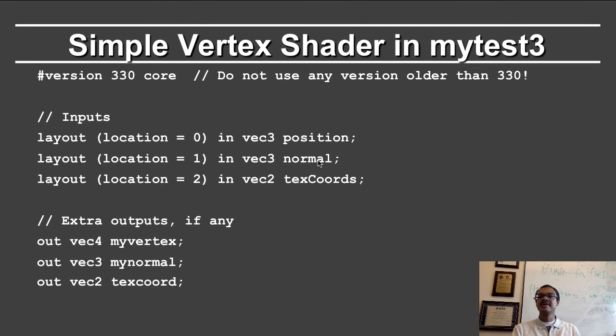The texture coordinates input are just two variables, which are typically denoted as s and t. The outputs are the extra outputs from the vertex shader, which will be interpolated or rasterized and sent to the fragment shader. These correspond to my vertex for lighting calculations, my normal, again for the surface normals in the fragment shader for lighting calculations, and the texture coordinates, which will be provided to the fragment shader.